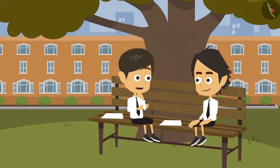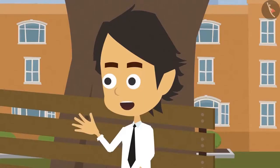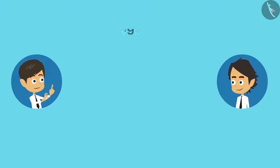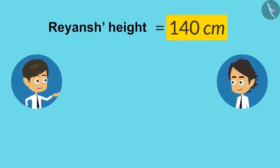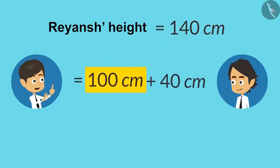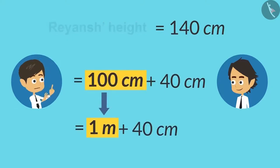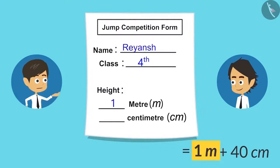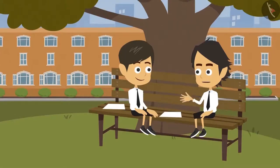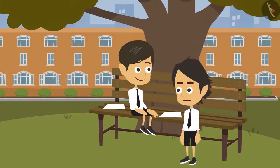Now I can also write my height by converting it into meters. My height is 140 centimeters, so I can write it as 100 centimeters plus 40 centimeters. Now I can write this 100 centimeters as 1 meter. Therefore, my height is 1 meter 40 centimeters. The form has been filled. Come, let's give it to the teacher.